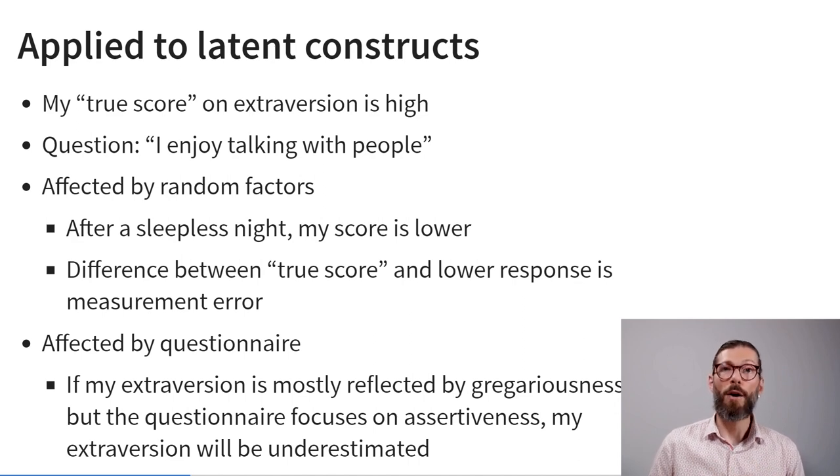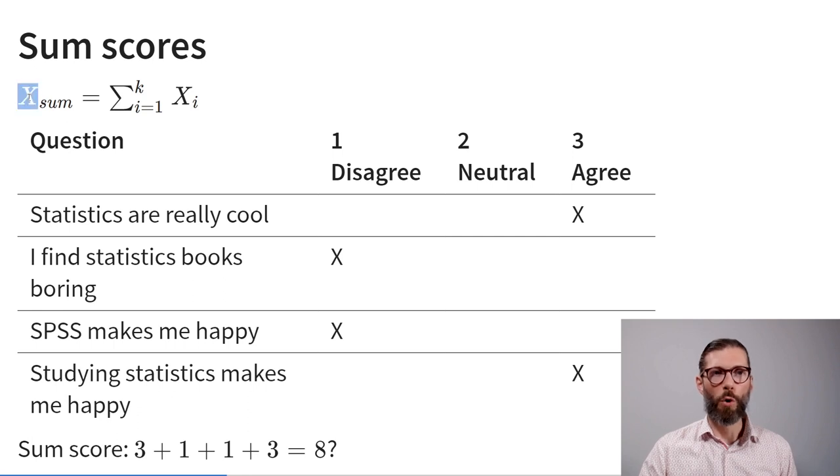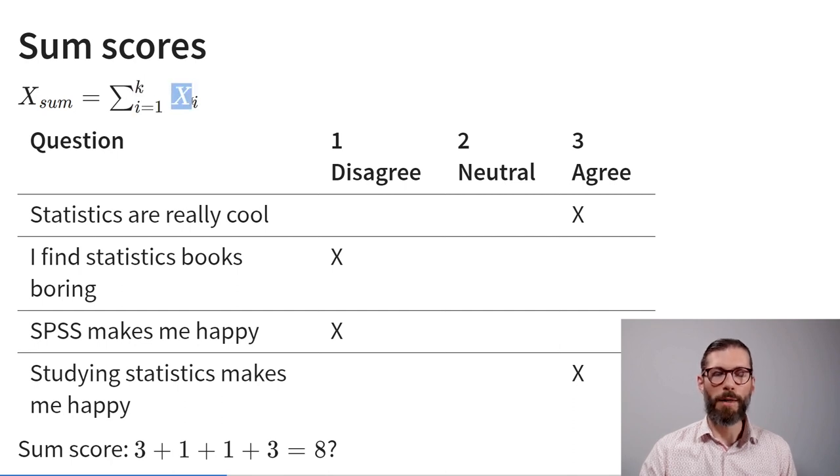Assume we've collected people's responses to several items on a questionnaire. How do we consolidate their responses into a scale score? One very straightforward way is to calculate a sum score across all items that are supposed to measure the same underlying latent construct. The sum score is a sum across all items one through k of the observed individual scores on those items.